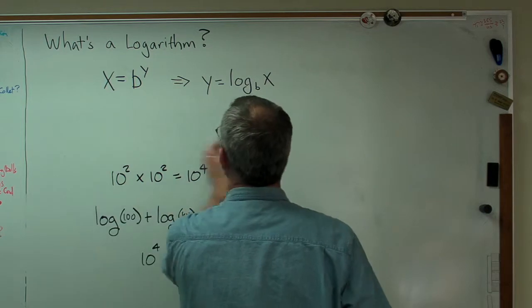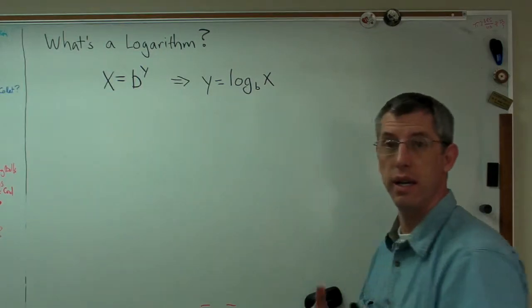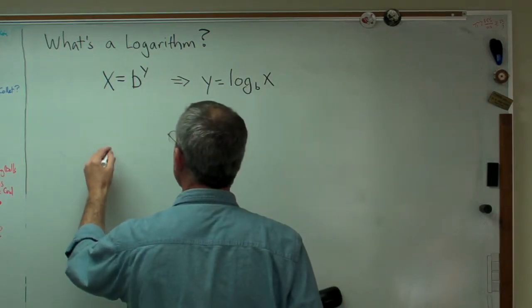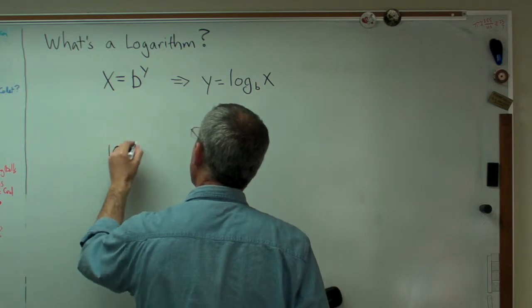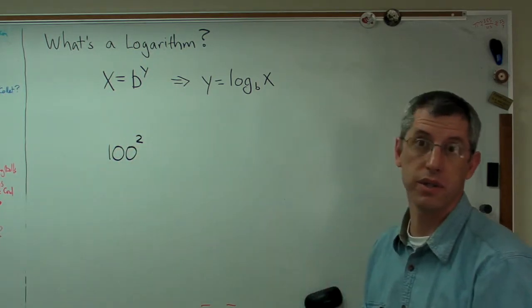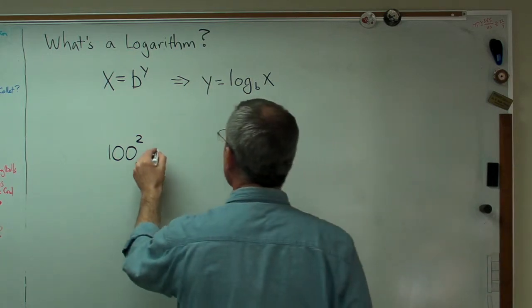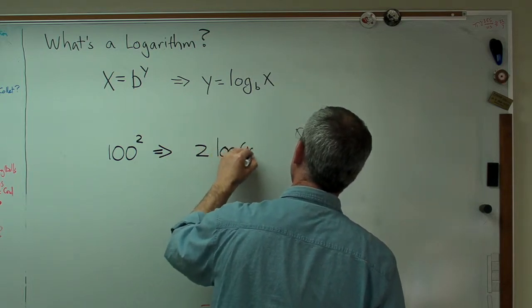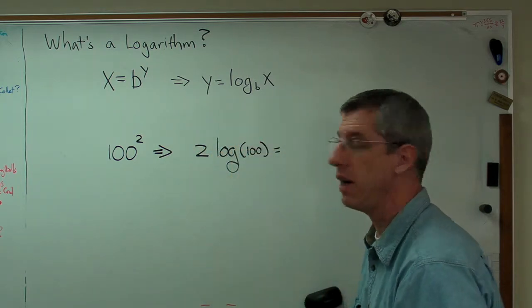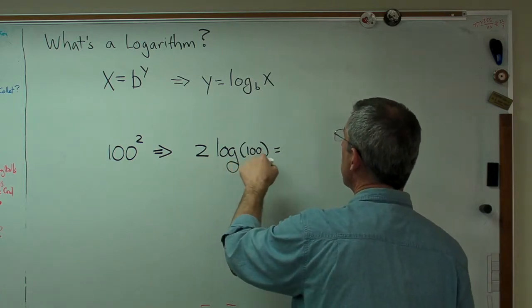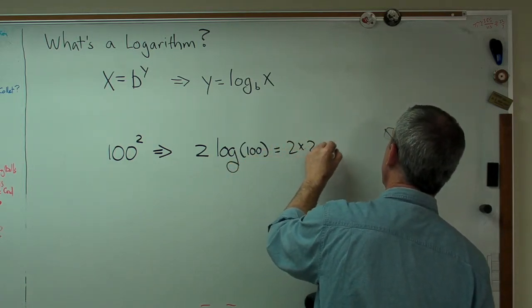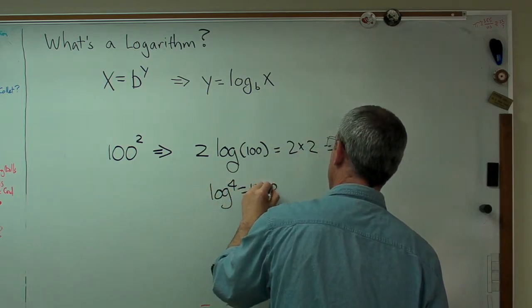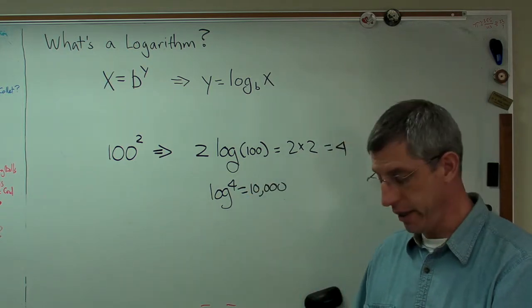And similarly, they turn exponents into multiplication. They take every operation and they move it down a level. So if I wanted to take 100 to the second power, which is the same as multiplying 100 by 100, what I could do is I could say 2 log 100 equals some number. And that number is 2 times the log of 100 is also 2. That's 2 times 2, that equals 4. And 10 to the 4 equals 10,000, just like before.